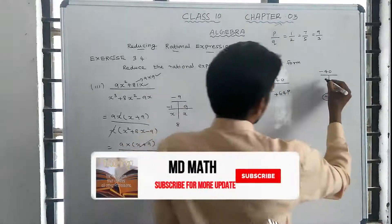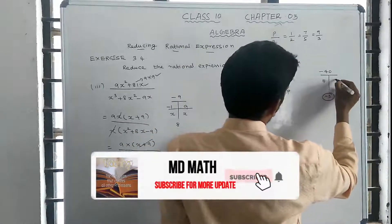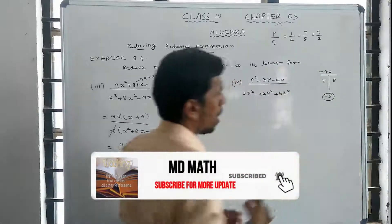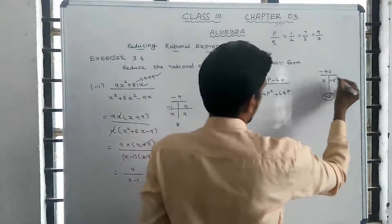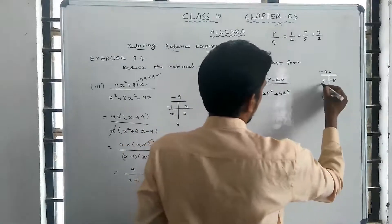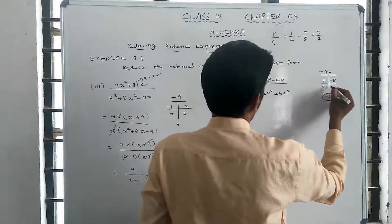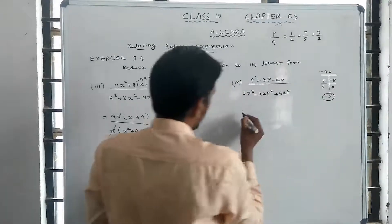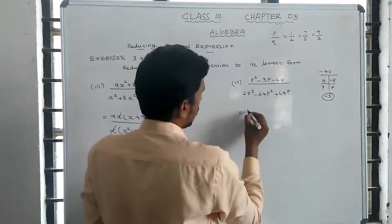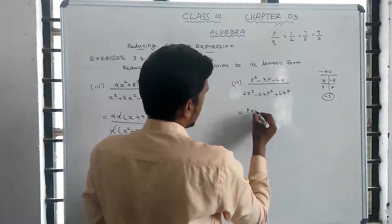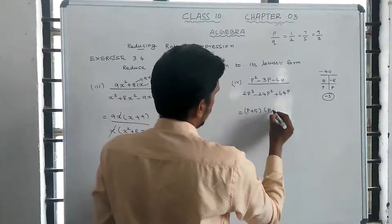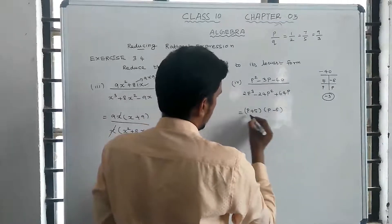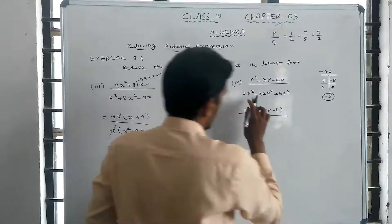The factors are 5 and 8, giving minus 8 times 5 equals minus 40 and minus 8 plus 5 equals minus 3. So the numerator factors as p plus 5 times p minus 8. The denominator is divided by p first.